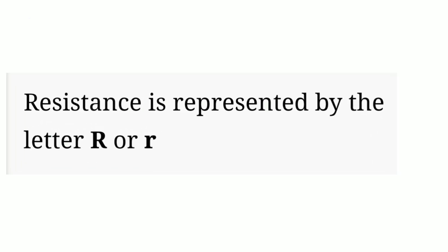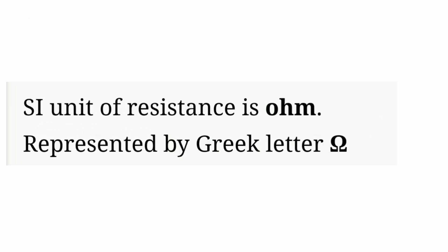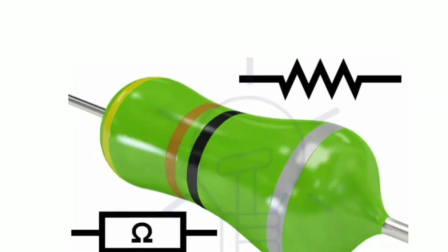Resistance is represented by the letter R. SI unit of resistance is ohm, and it is represented by Greek letter omega (Ω). Picture of a resistor and its symbol used in a circuit is shown here.